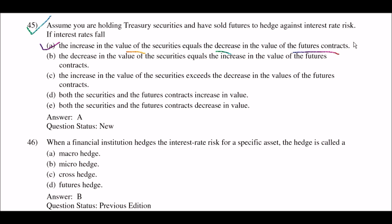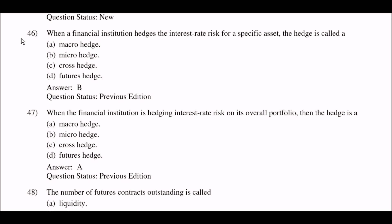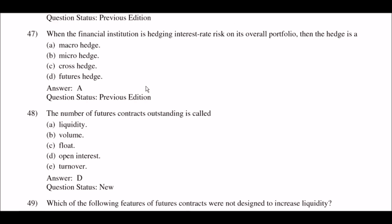Next question: when a financial institution hedges the interest rate risk for a specific asset, the hedge is called — option A: macro hedge; option B: micro hedge; option C: cross hedge; option D: future hedge. The right answer is option B: micro hedge.